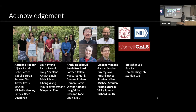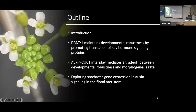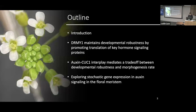I would also like to thank my funding sources for supporting me through my PhD. Today, my talk is divided into four parts. First, I'll give a brief introduction, then talk about my first project: how Jimmy One maintains developmental robustness by promoting the translation of key hormone signaling proteins. Second, I'll discuss how the auxin-CAC1 interaction may be a trade-off between developmental robustness and morphogenesis rate. Lastly, I'll briefly explore stochastic gene expression in auxin signaling in the Arabidopsis floral meristem.